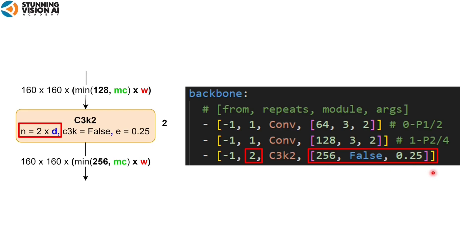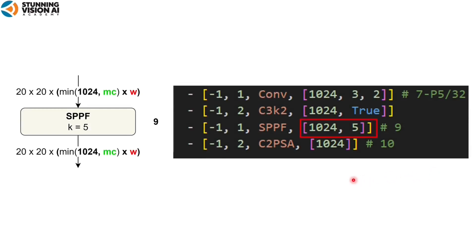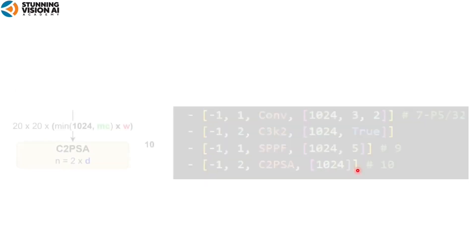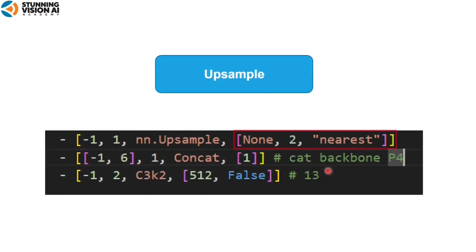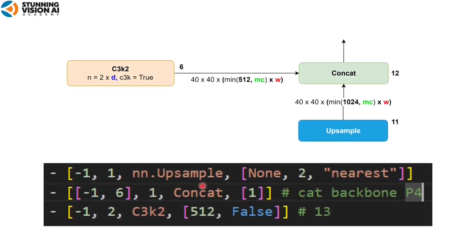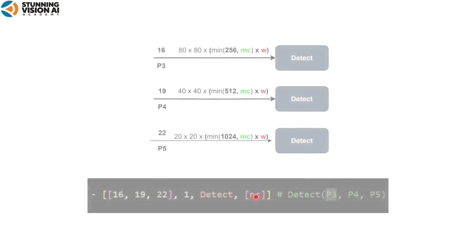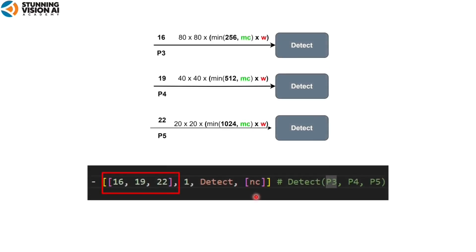In the SPPF block, there are 2 arguments: base output channel and kernel size. In the C2PSA block, repeats define the N parameter, which determines the number of PSA blocks. To determine N, repeats are multiplied by the depth multiple. There is 1 argument: base output channel. This block is newly introduced in YOLO 11. In the upsample block, there are 3 arguments: output channel size, scale factor, and the upsampling algorithm. In the concat block, since it combines the output from 2 blocks, the value of 'from' is in the form of a list — for example, concat connects the previous block with block number 6, and has 1 argument: dimension. In the detect block, it can connect to several blocks and has 1 argument: number of classes.